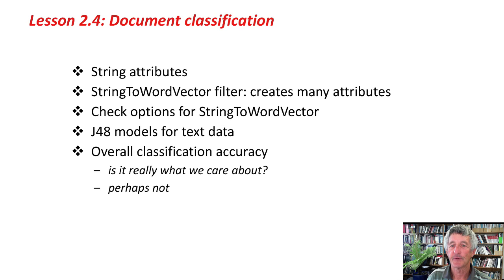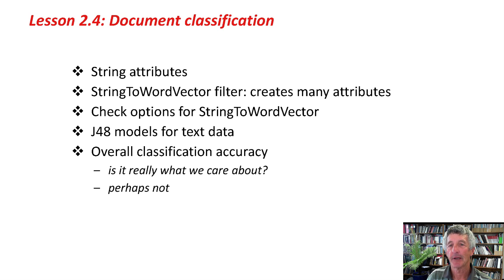We looked at J48 models for text data — J48 is not necessarily a very sensible learning scheme to use on text data. Then we looked at overall classification accuracy: is it really what we care about? Perhaps not. That's what we're going to look at in the next lesson. But before you do that, you should do the activity, which will get you to do a little more work on classifying real documents. Good luck with that, and we'll see you in the next lesson.